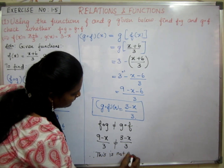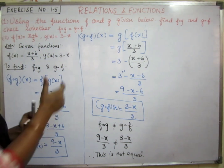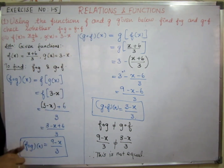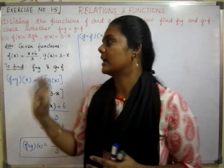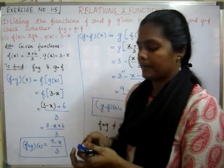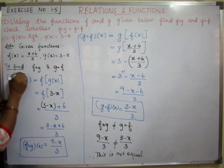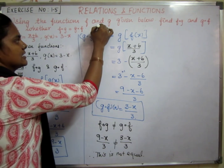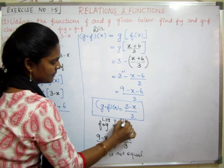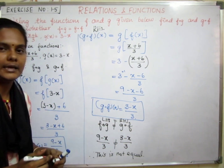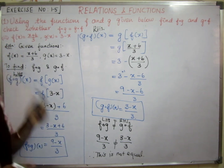Verify: as per the condition, if we find the values equal, then LHS equals RHS. Let's check: if we substitute a value and get LHS equal to RHS, we prove it. In this case, the values are not equal. So this is not equal. That is the third problem.